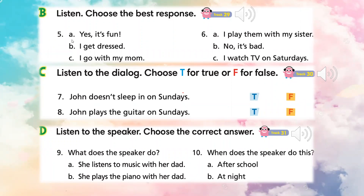Number five — we have three responses. A: Yes, it's fun. B: I get dressed. C: I go with my mom. Then number six — response A: I play them with my sister. B: No, it's bad. C: I watch TV on Sunday.